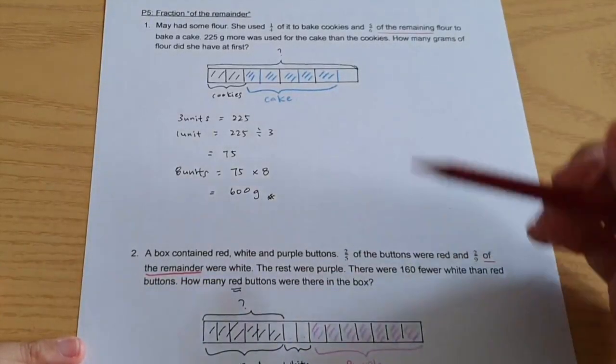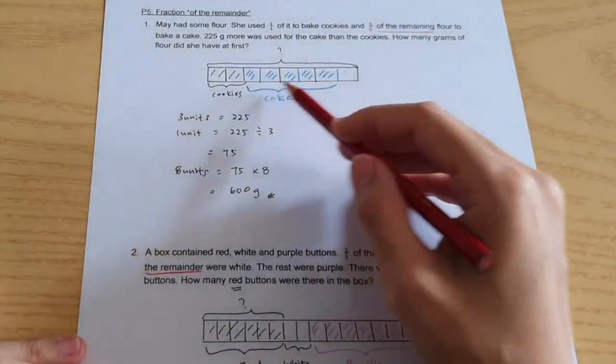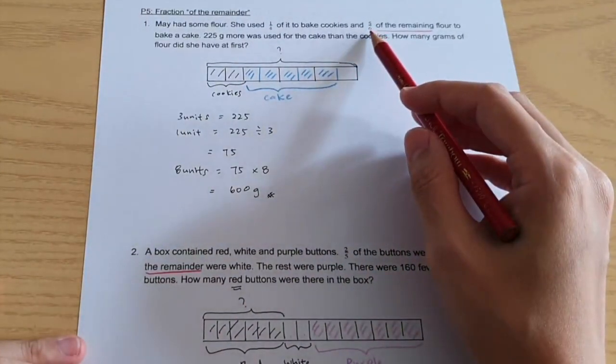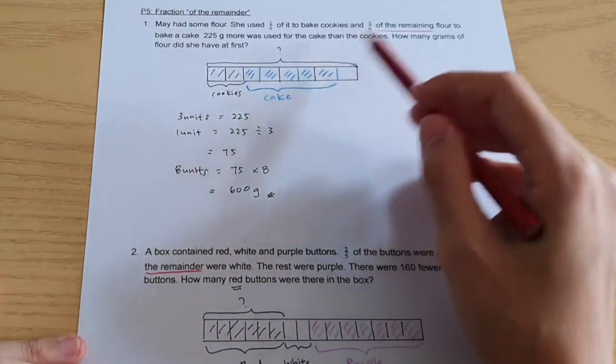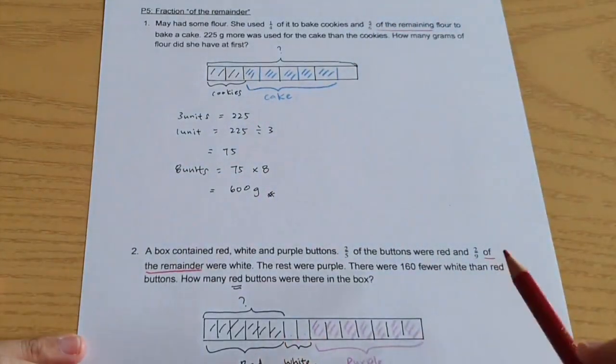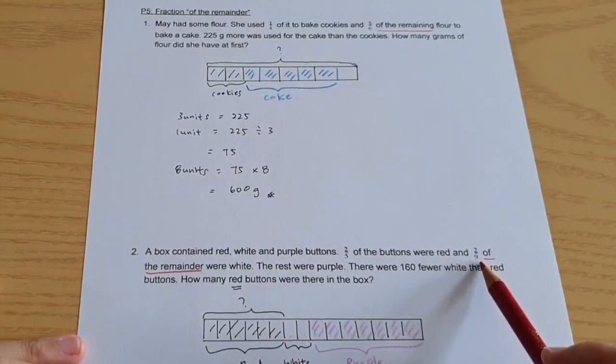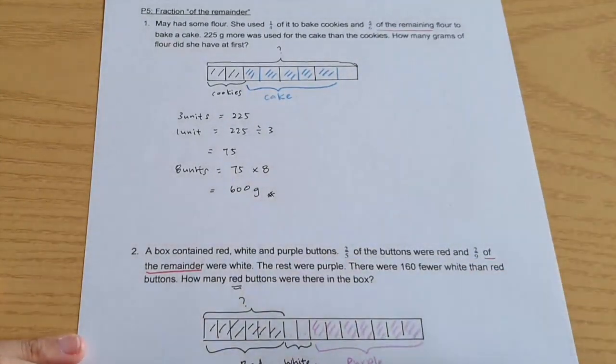As you can see for the first two questions, we were able to cut the remainder into the exact number of units that we want. For this, to cut into six units. And for this, to cut the remainder into nine units. That's the reason why we chose to use model method for these two questions.